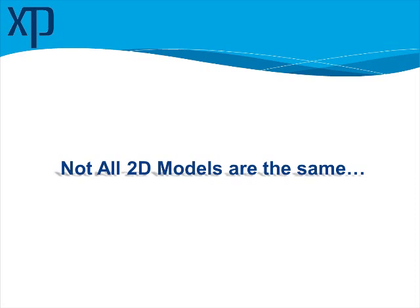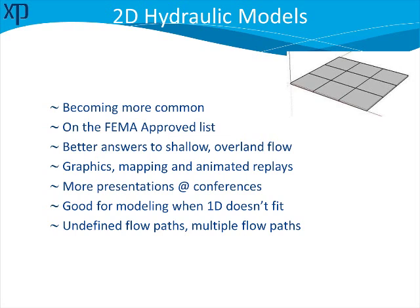FEMA is looking at this as well. What is in the 2D models? There are a number of models available, many of them academic. What are the underlying assumptions? Is it supported? Is it documented? There are several important criteria that we as practitioners need to understand when looking at a model. Different models were built for different purposes. The 2D model is becoming quite common — if you've been to floodplain management conferences recently, you've seen more presentations talking about 2D hydraulic modeling. It is a great tool and gives great results for shallow overland flow.